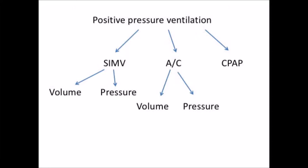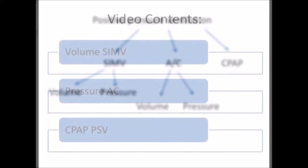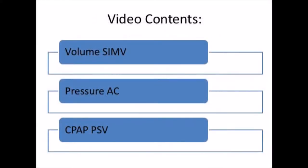There are various modes to deliver positive pressure ventilation: synchronized intermittent mandatory ventilation, or SIMV; assist control, or AC; and continuous positive airway pressure, or CPAP. These modes can be set according to volume or pressure. In this video, we will be focusing on volume SIMV, pressure AC, and CPAP with PSV.